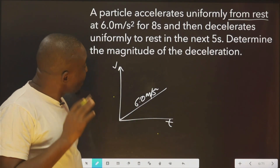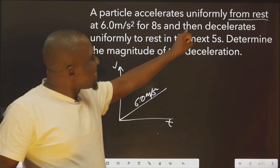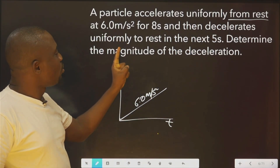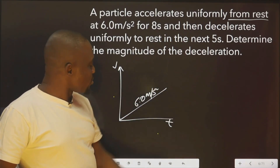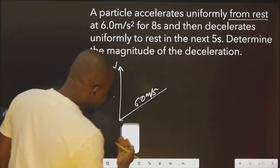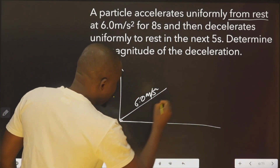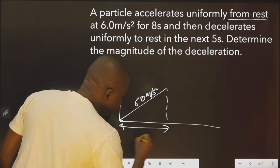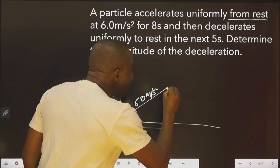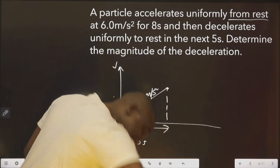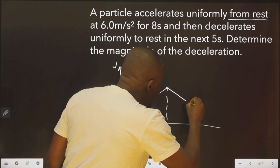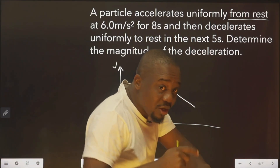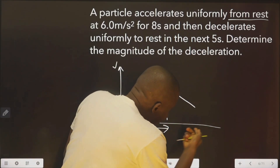After that, then it decelerates uniformly to rest in 5 seconds. So from here to here it was 8 seconds. Now decelerate — the velocity is reducing while the time is still moving. Your clock never stops.